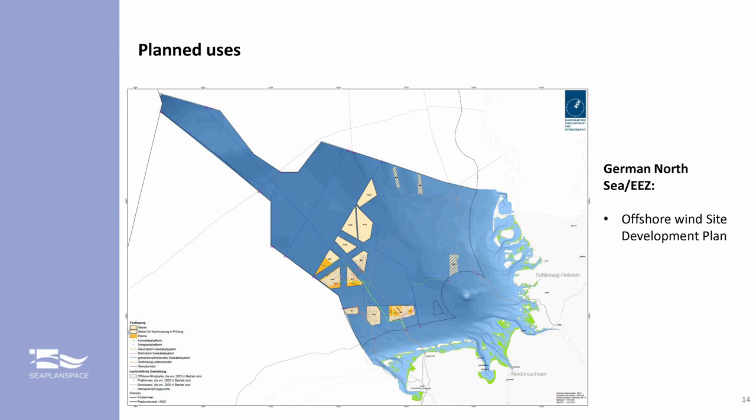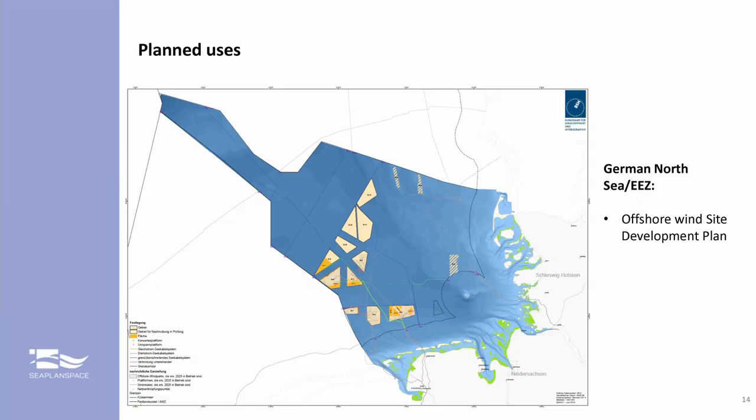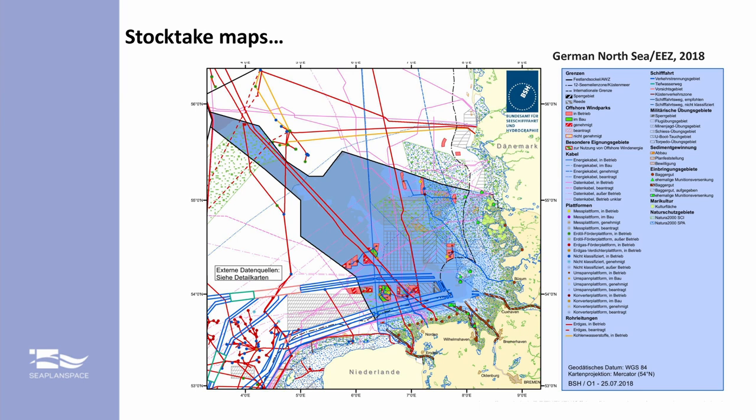On top of that, it's always worth looking at planned uses, and mapping like this is really helpful. These are planned offshore wind farming sites — a site development plan, a sector plan, not a marine spatial plan — showing areas dedicated for the development of offshore wind. That's already forward-looking, maybe a 10-year strategic plan. These are uses that do not yet exist as such in the sea. A stock take map brings it all together: this one from 2018 shows the picture when you overlay all these various existing uses, and you can see there's a lot really going on.